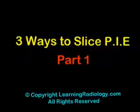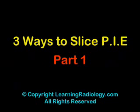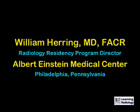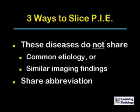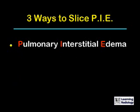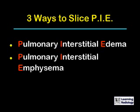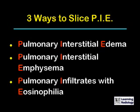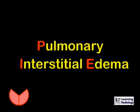This is Video Podcast 12 from LearningRadiology.com: Three Ways to Slice PIE, Part 1. I'm William Herring from Albert Einstein Medical Center in Philadelphia. There are three diseases which share the acronym PIE. These diseases do not have a common etiology or even similar imaging findings, but they're all known as PIE. The diseases are pulmonary interstitial edema, pulmonary interstitial emphysema, and pulmonary infiltrates with eosinophilia. Today we're going to talk about pulmonary interstitial edema as the first slice of the pie.